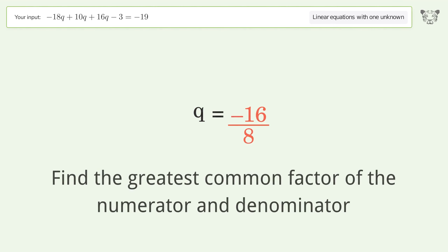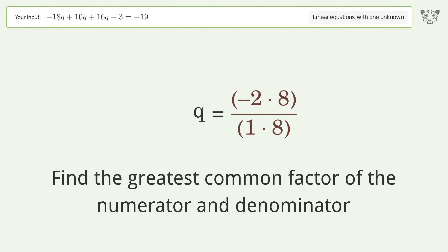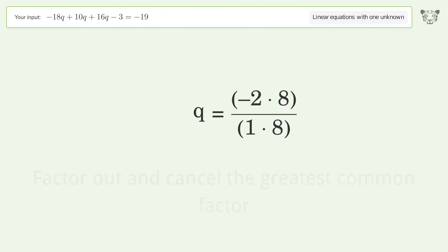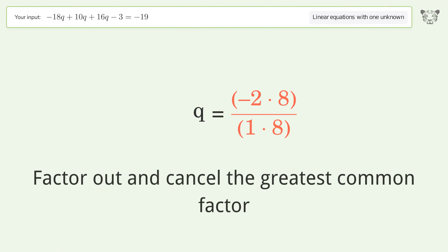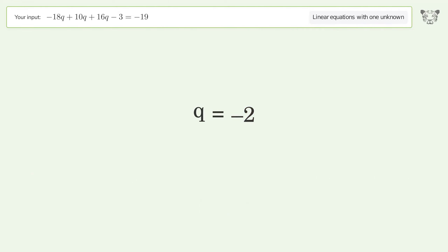Find the greatest common factor of the numerator and denominator, then factor out and cancel the greatest common factor. The final result is q equals negative 2.